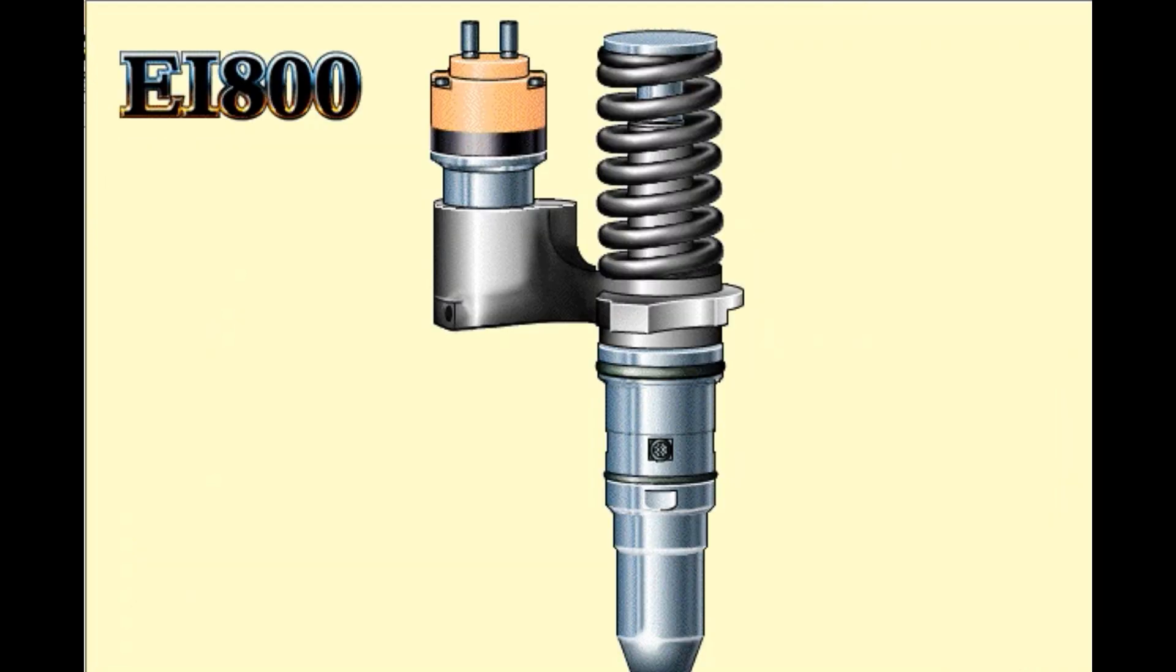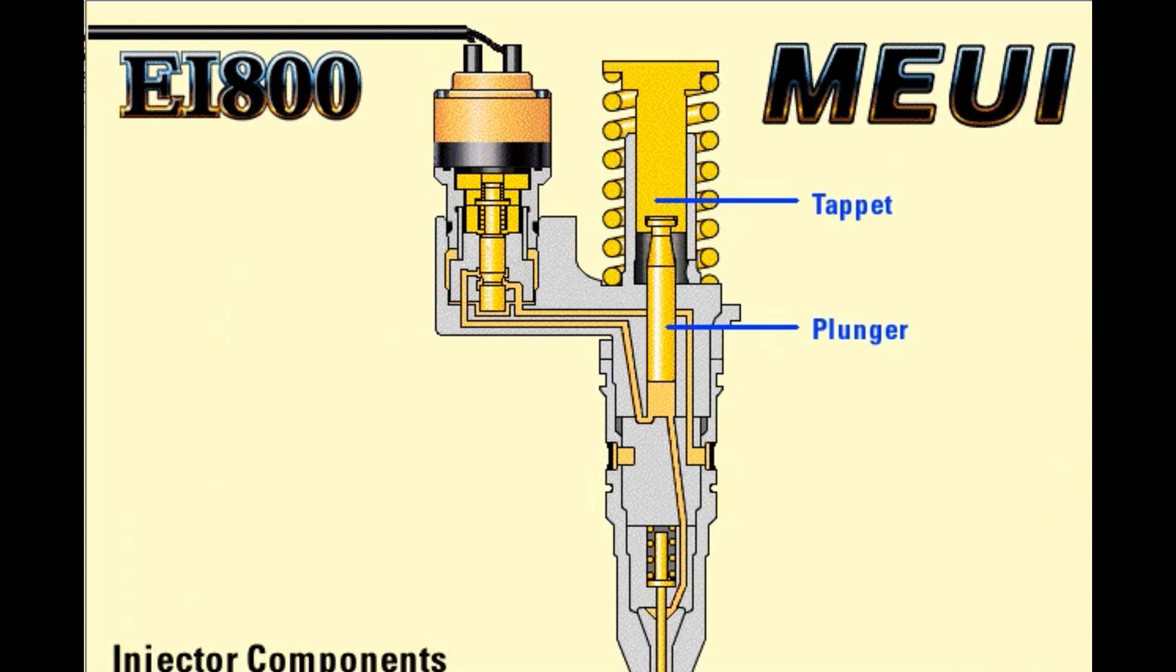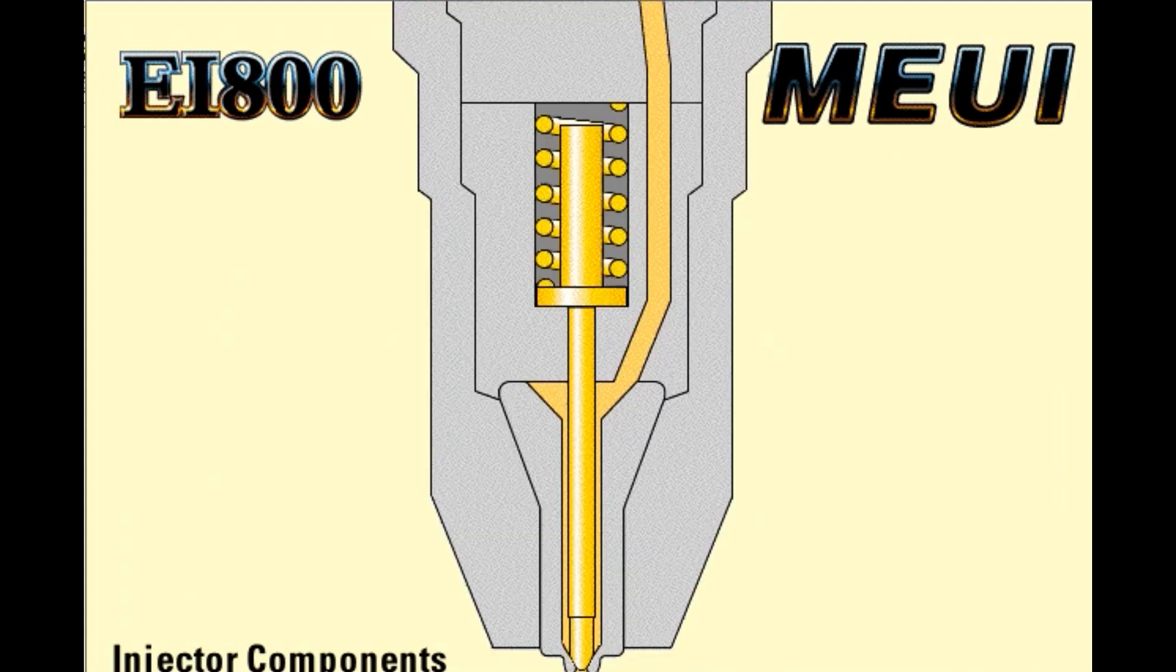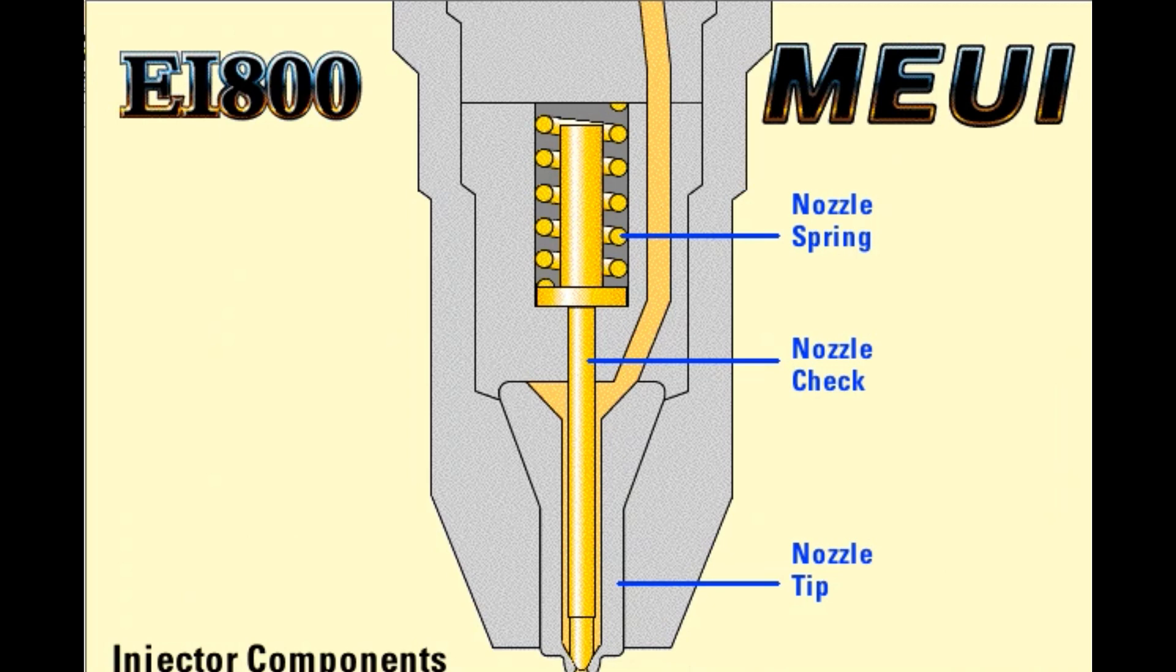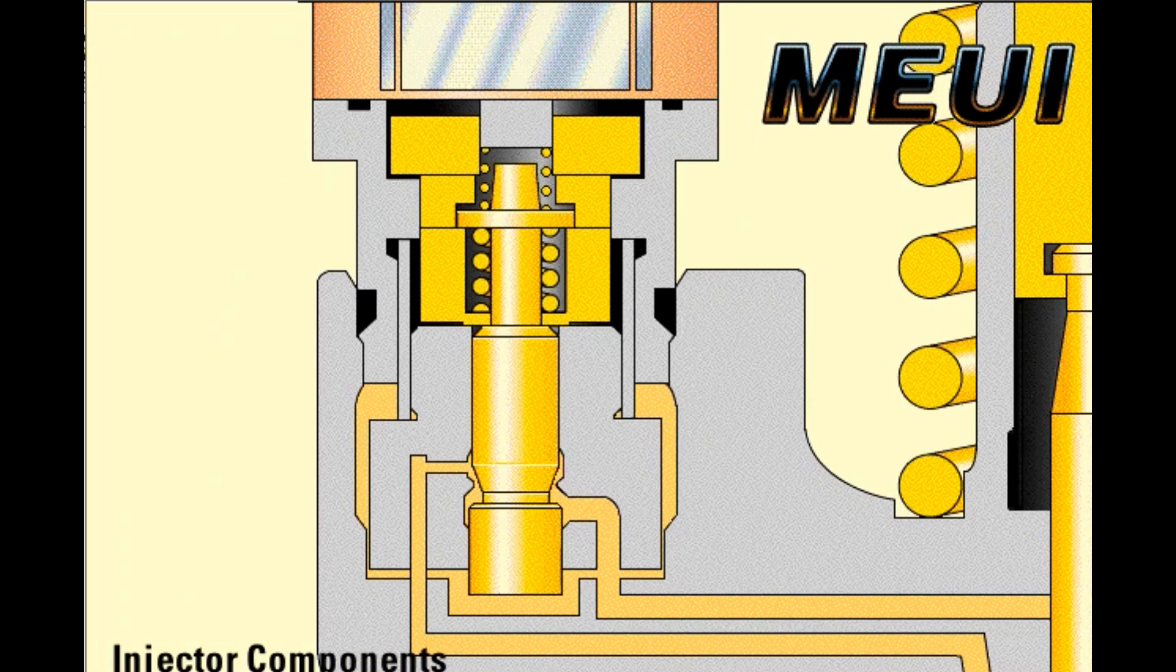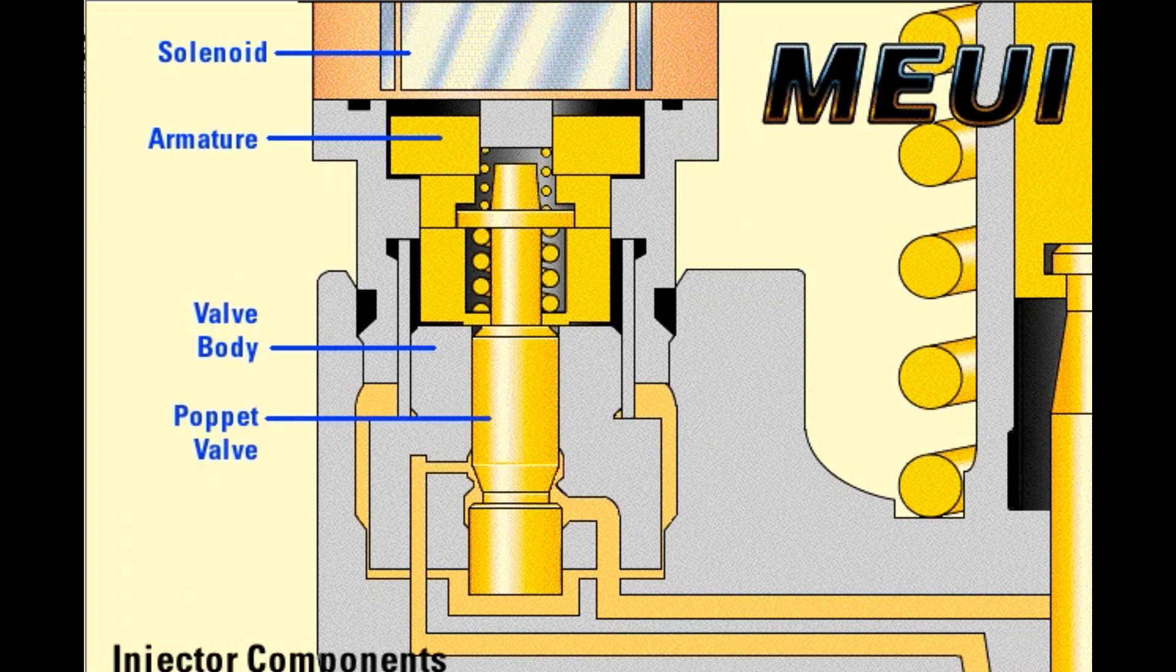Major parts of the injector include the tappet, plunger body, nozzle assembly, and cartridge valve. The nozzle assembly consists of a nozzle spring, nozzle check, and nozzle tip. The cartridge valve consists of a valve body, solenoid, armature, poppet valve, and poppet spring.